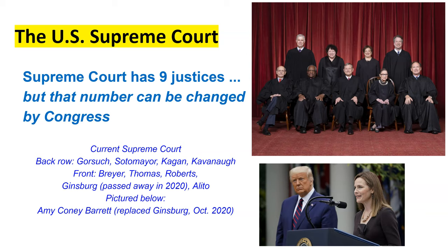Justice Stephen Breyer was appointed by President Bill Clinton from Massachusetts. Clarence Thomas, second from the left, was appointed by George Herbert Walker Bush — Bush 41 — and is the longest serving on the court right now, having served since around 1991. In the middle we have Chief Justice Roberts, appointed by George W. Bush — Bush 43. He was originally appointed for Sandra Day O'Connor's seat, but when Chief Justice William Rehnquist, who had throat cancer, passed away, Bush rescinded that nomination and nominated Roberts for Chief Justice.